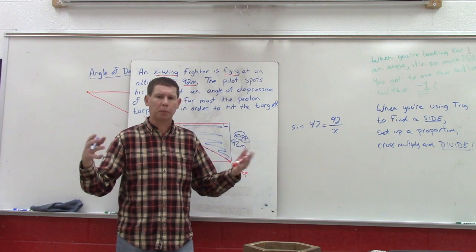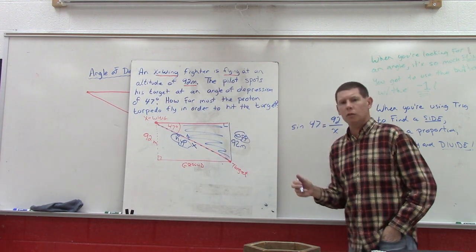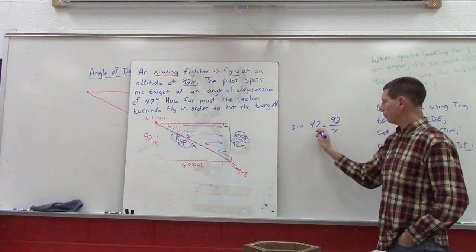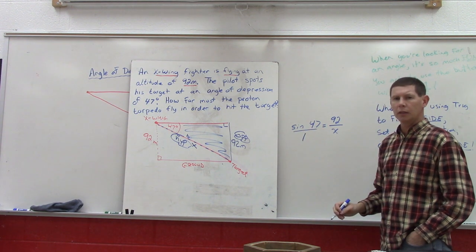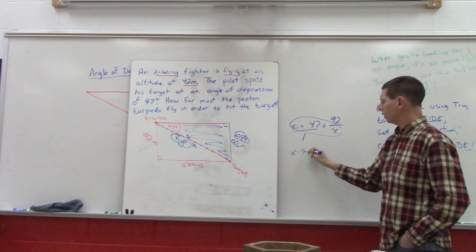And that second verse of Grandmaster Trig: when you use trig to find a side, set up a proportion, cross multiply and divide. So we're going to set that proportion up. Under any number we can create our own denominator, so that's 1. We're going to cross multiply: X times the sine of 47 and 92 times 1.